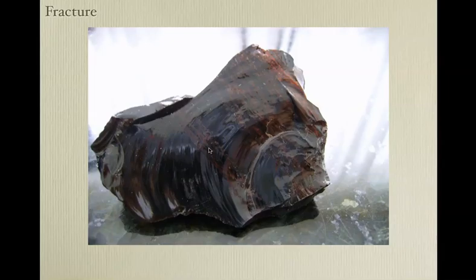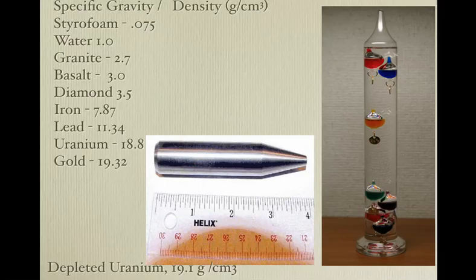Some minerals or rocks don't cleave very well — they just fracture. In this case, obsidian is a rock that is naturally occurring glass. It occurs where basaltic lava cools down really quickly and contains a lot of silica. Native Americans used this to make spear points and arrowheads.